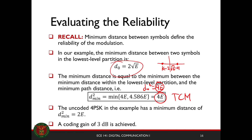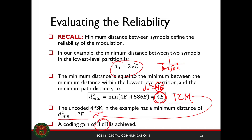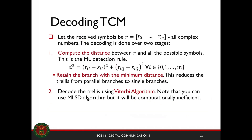The uncoded 4PSK example has a minimum distance of square root of 2E. That means the minimum distance — even if we have the same bandwidth and the same data rate — the minimum distance in your Trellis-coded modulation is twice that of the uncoded case. That means a coding gain of 3 dB is achieved using this Trellis-coded modulation.